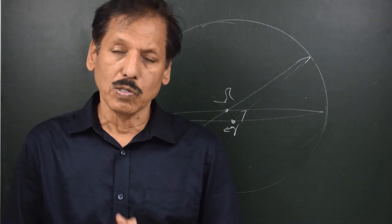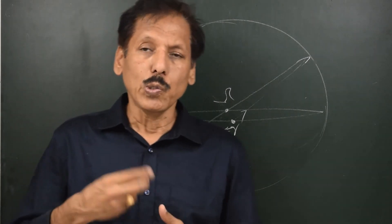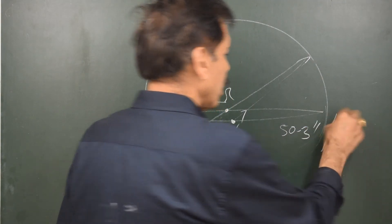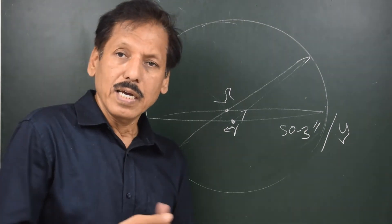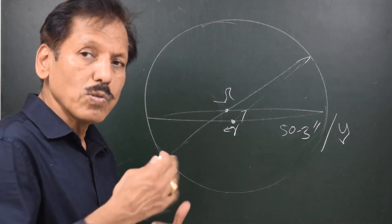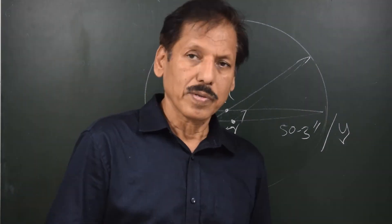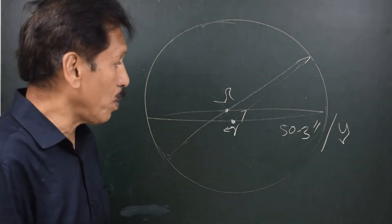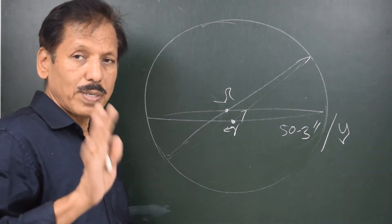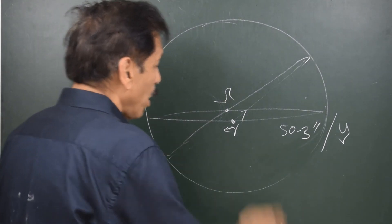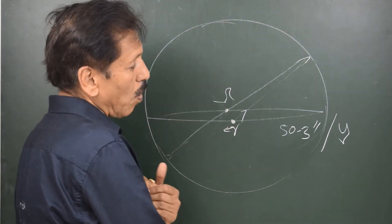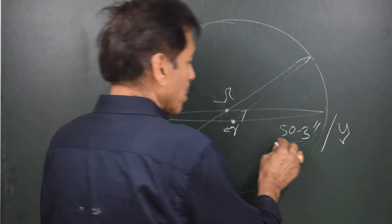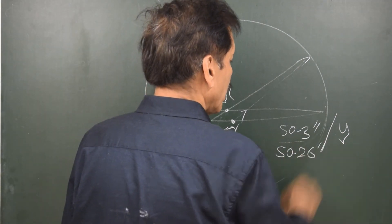This is called lunisolar precession which is about 50.3 seconds per year, which will complete the journey in about 25,800 years. As I told you, 12,000 years ago Vega was the pole star and after about 13,800 years Vega is going to be pole star once again. And in between there's going to be no pole star. So enjoy the pole star's presence at the pole as much as you can. Now Aries moves westward, regresses westward, slides westward on ecliptic by 50.3 seconds per year. There is some amount of planetary precession also because of which the total rate becomes 50.26 seconds per year.